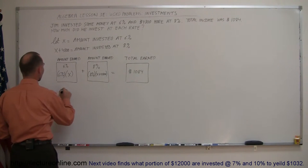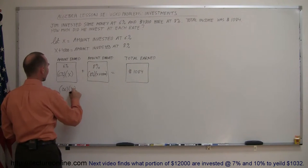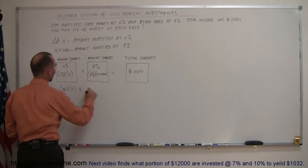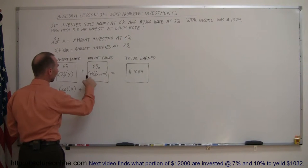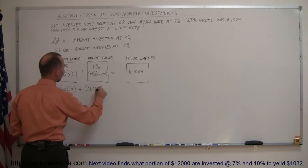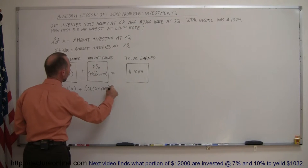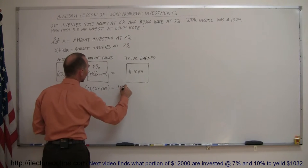We can now write that 0.06 which is the decimal equivalent of 6% times x plus 0.08 which is the decimal equivalent of 8% times x plus 4800. That adds up to 1084.